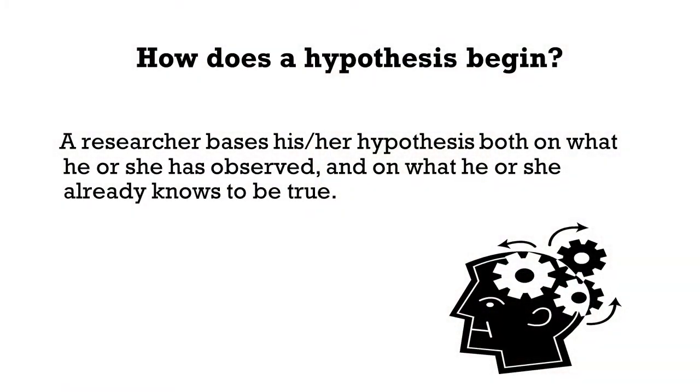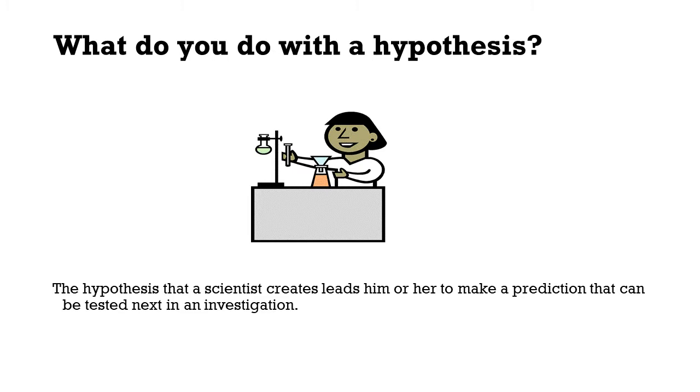Now at what juncture does a hypothesis begin? When do we make a hypothesis? A researcher makes a hypothesis based on what he or she has observed and what he or she already knows to be true. It is based on some literature reading that the researcher makes a hypothesis. Simply without any understanding, we cannot make a hypothesis. You need to read about the particular topic in detail so that you already know what facts exist, and based on those existing facts, you make a statement. The hypothesis then leads the scientist to make a prediction that can be tested in an investigation.